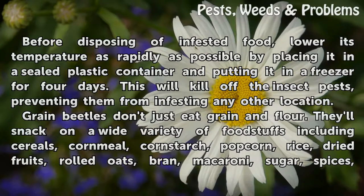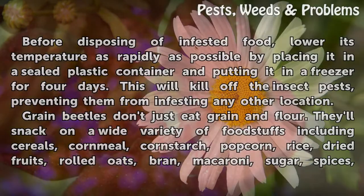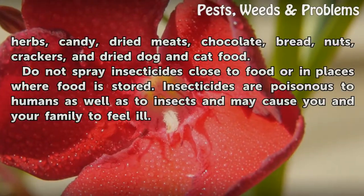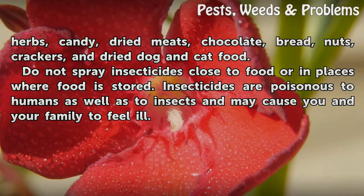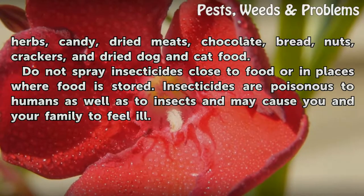Grain beetles don't just eat grain and flour. They'll snack on a wide variety of foodstuffs including cereals, cornmeal, cornstarch, popcorn, rice, dried fruits, rolled oats, bran, macaroni, sugar, spices, herbs, candy, dried meats, chocolate, bread, nuts, crackers, and dried dog and cat food.